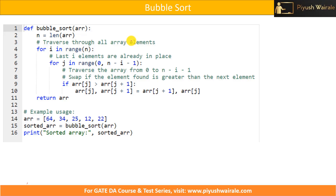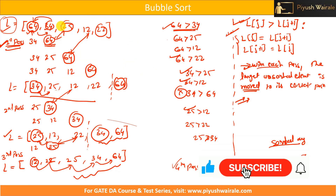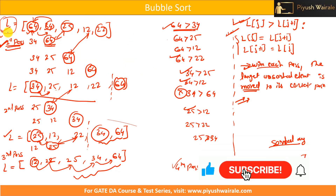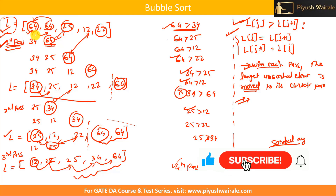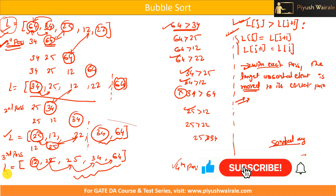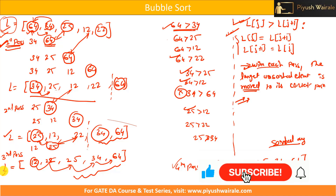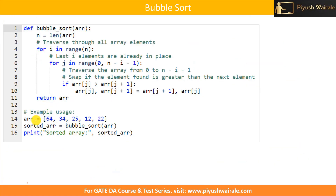In the previous video we discussed the bubble sort algorithm and applied it to a particular example, getting the sorted list after the third pass. Now let's try to understand this algorithm using Python.